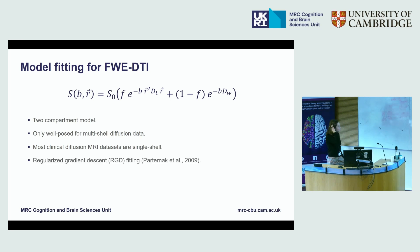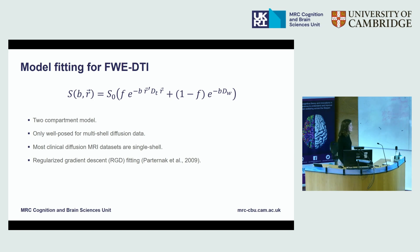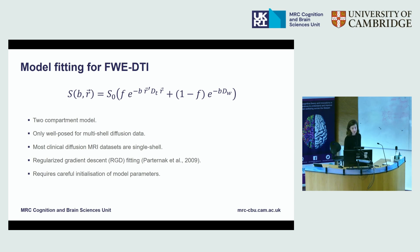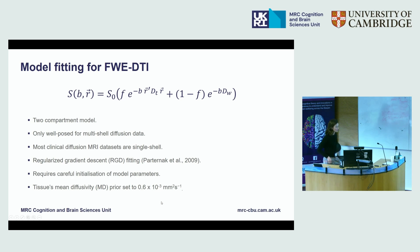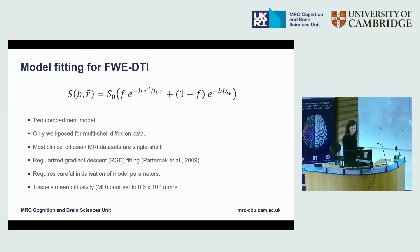In 2009, such a model was proposed by Pasternak and colleagues. In order to do this, they had to use a regularized gradient descent fitting method. The 'regularized' here means there are some priors — some things that have to be set, otherwise the fitting doesn't converge. This model also requires very careful initialization of the model parameters. Specifically, some priors need to be included, in particular the mean diffusivity of the tissue, which is traditionally set to 0.6 × 10⁻³, the value reported in the literature as a typical mean diffusivity. But the problem is this value tends to be estimated from the diffusion tensor model, so there is a chance this prior is not ideal.